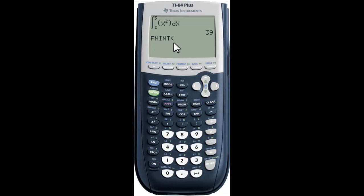What do you do if this is your prompt? Well, you start by typing in your function. So you start by typing in x squared, then you'll type in comma. Then you'll type x to let it know that that's the variable you're integrating by. You would hit comma.